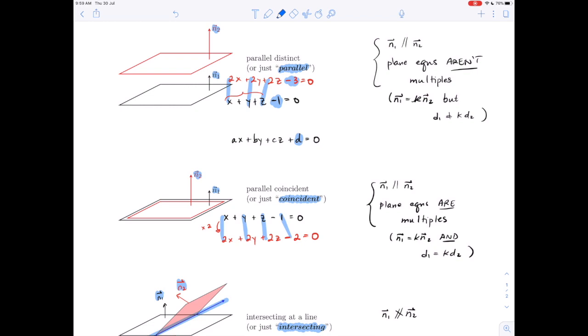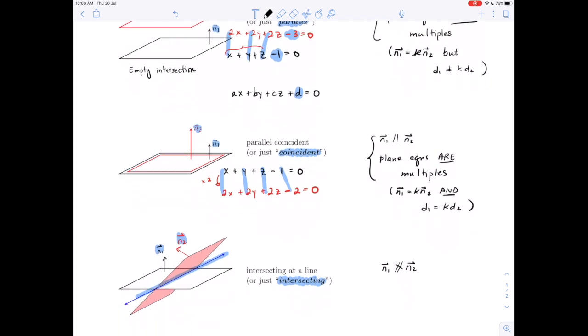If we wanted to look at intersections, it's a little harder to distinguish these cases by intersection. One of them is obvious: this is an empty intersection. There are obviously no points that these planes share in common. The coincident and the intersecting at a line case, they each share infinitely many points. Here there's infinitely many points in the intersection. And the same thing with the intersecting at a line: there's infinitely many points in the intersection. There's infinitely many points on a line. So a simple number of points in the intersection won't be enough to distinguish those.